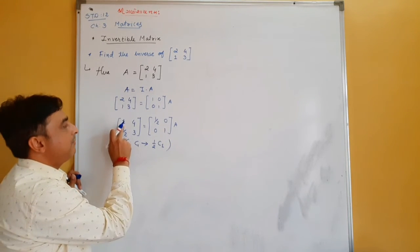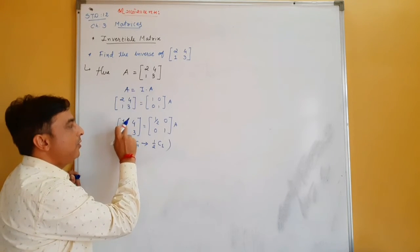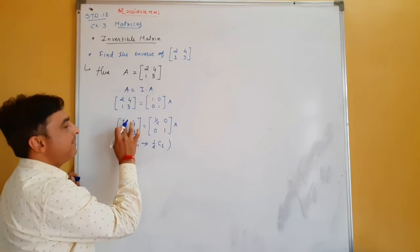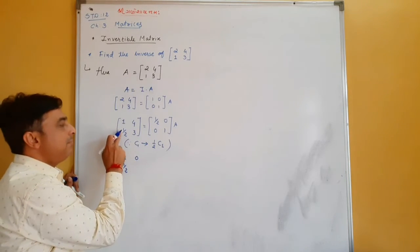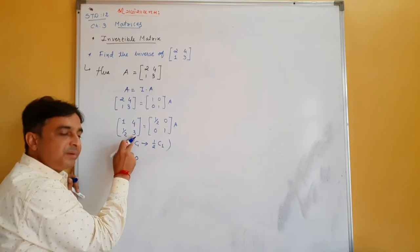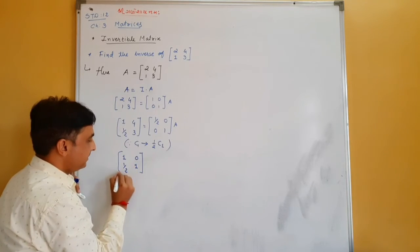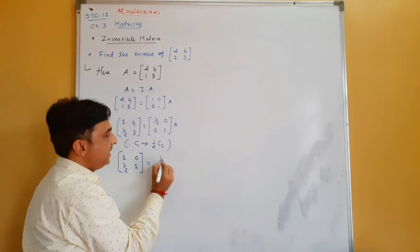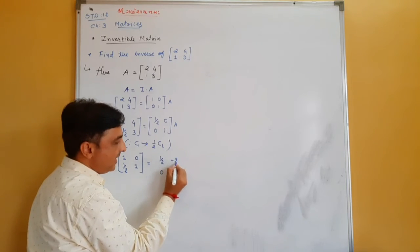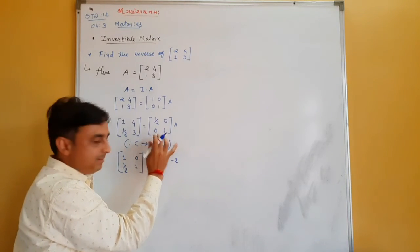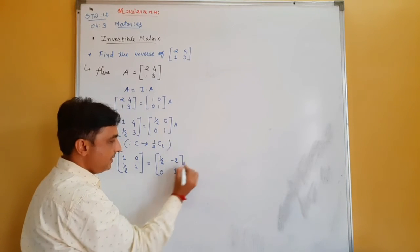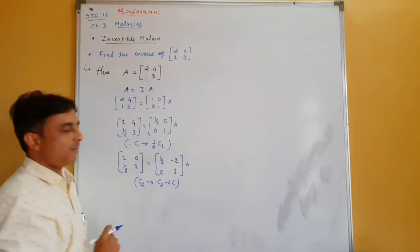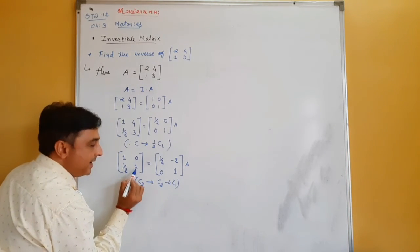After dividing column 1 by 2, the left side is [1,4;1/2,3] and the right side has column 1 as [1/2;0]. Now multiply column 1 by 4 and subtract from column 2 (C2 = C2 minus 4C1): left side gives [1,0;1/2,1], right side column 2 becomes [0 minus 2, 1] so [1/2,-2;0,1].